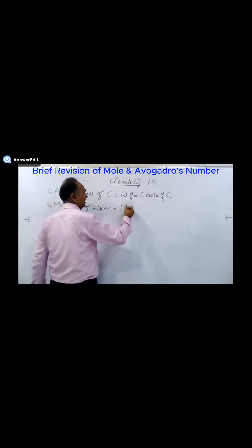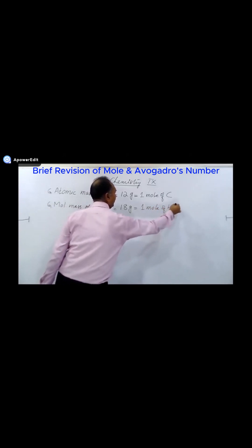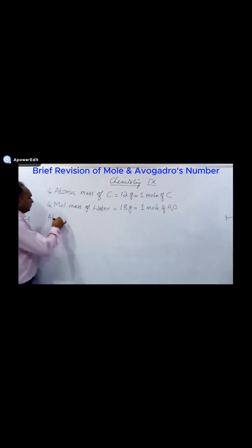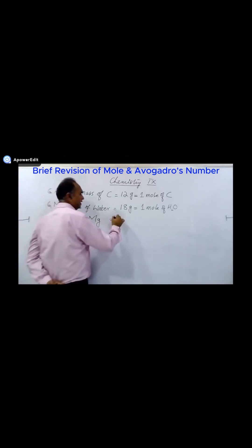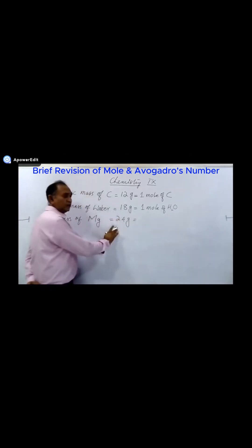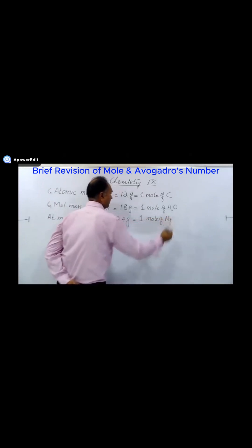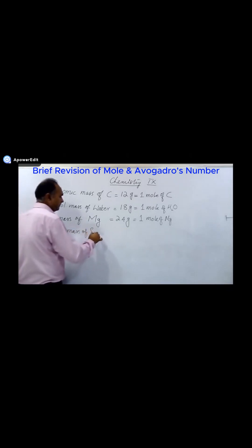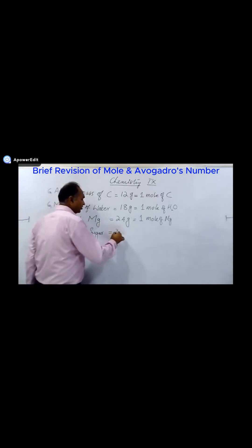18 grams of water is also called one mole, because one mole of any substance means its atomic or molecular mass expressed in grams. For example, the atomic mass of magnesium is 24 grams — we call that one mole. The gram molecular mass of sugar, C₁₂H₂₂O₁₁, was calculated yesterday as 342 grams.